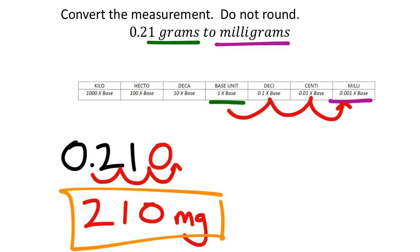That's what I like about this section — it's just a matter of moving the decimal. If you know how many times to move it, converting metric to metric becomes very simple. In all other cases though, we need dimensional analysis, so we'll be seeing a lot more of that in the other sections of this unit.